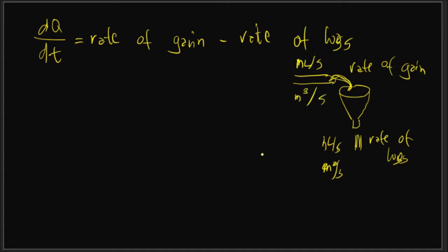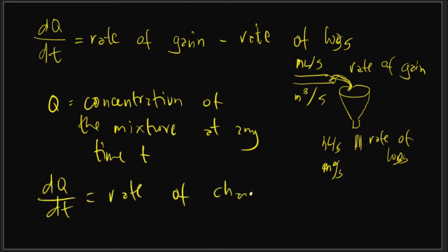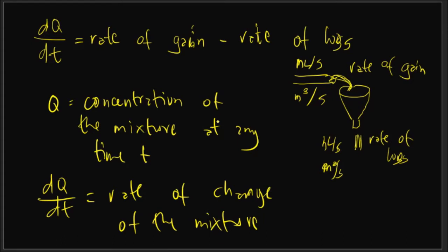We are trying to find Q, which is the concentration of the mixture or the fluid at a given time t. And dq/dt is the rate of change of the mixture. We need to get the equivalent equations for the rate of gain minus the rate of loss so we can solve the differential equation for the given problem.